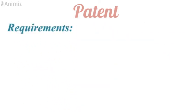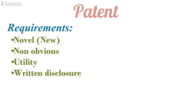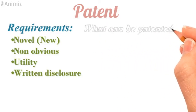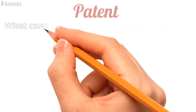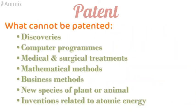What are the requirements to get a patent? The product or process should be novel — that means new — it should be non-obvious, and it should have a utility value. What can be patented? A product, a process, an apparatus for producing the product, and the composition of matter can be patented. Things which cannot be patented include discoveries, computer programs, medical and surgical treatments, mathematical methods, business methods, new species of a plant or an animal, and inventions related to atomic energies.